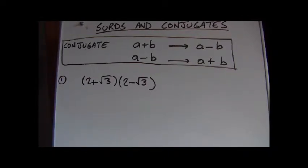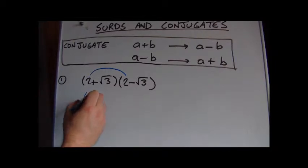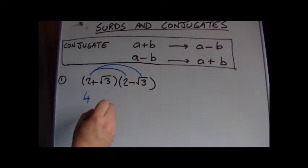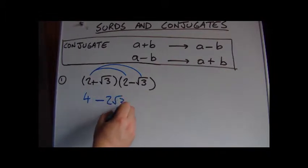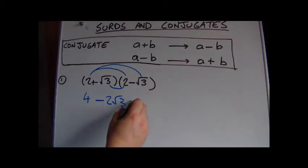Let's see what happens when we take an expression containing a surd and multiply it with its conjugate. We'll do this in the normal way by multiplying the terms out like this, so 2 times 2 will give us 4, 2 times minus root 3 will give me minus 2 root 3.